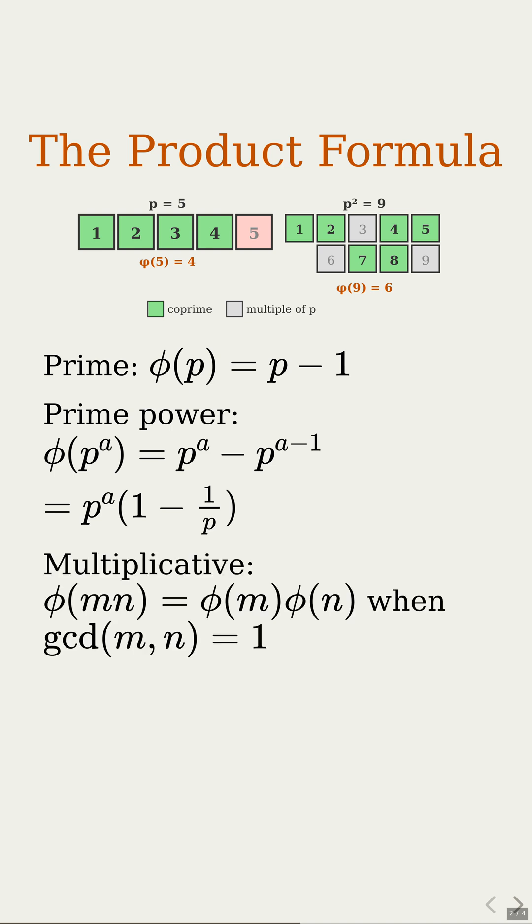Now the key fact: phi is multiplicative. If m and n share no common factors, then the number of co-prime residues modulo m times n is the product of phi of m times phi of n.